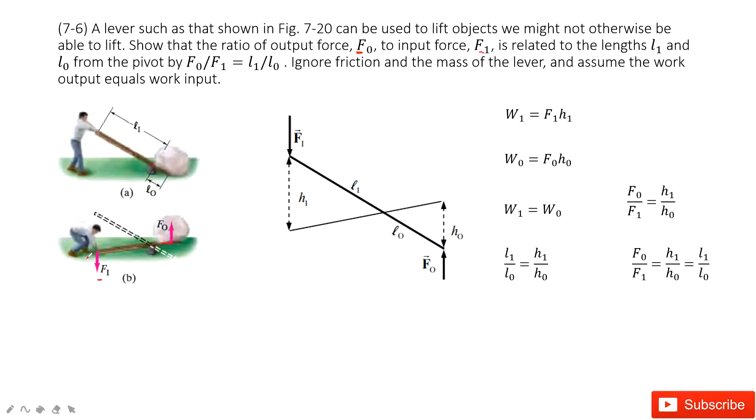So if we want to assume the work output equals the work input, that means the work done by F1 equals the work done by F0. These two works equal. Then we can see the distance it moved, so this is h1, this is h0. We will assume this work equals this work, and then we use this way to prove this ratio.